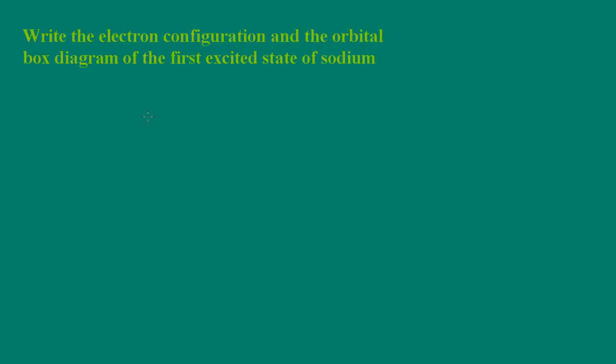So the first thing we should do is go ahead and write the electron configuration and the orbital box diagram for ground state sodium. Okay, so we have 11 electrons to distribute here. And let's go ahead and start with the orbital box diagram. So let me draw this.